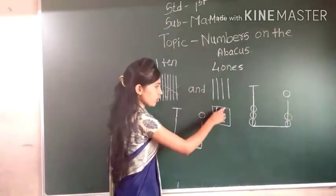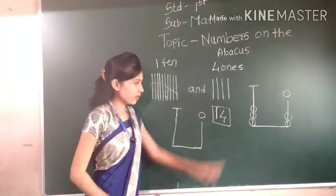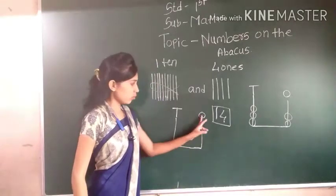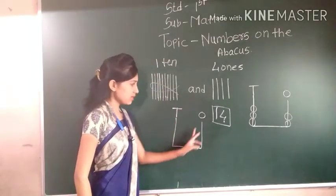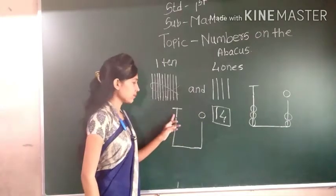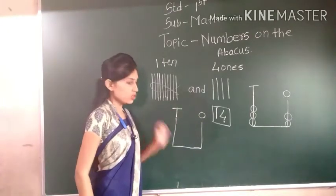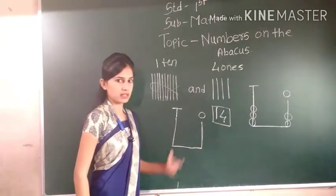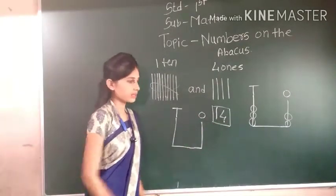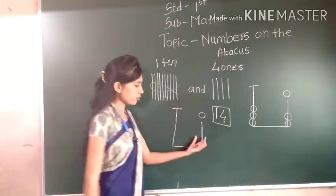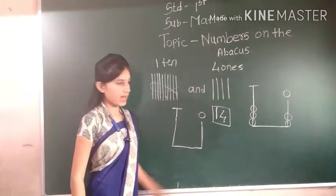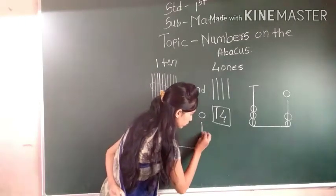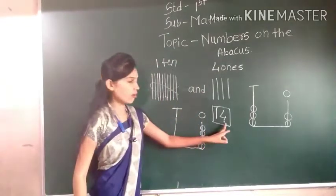So, four ones and one ten. We have to draw four ones here. Here are two spikes — one, two. Two spikes: one's place and ten's place. Capital O denotes one's place and capital T denotes ten's place. Fourteen represented on abacus — we have to represent fourteen on abacus. So, four ones — we have to draw four bits at one's place. Let's draw one, two, three, four bits.